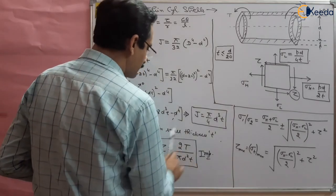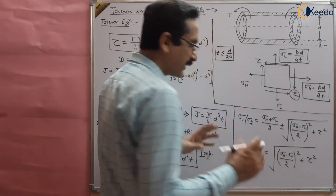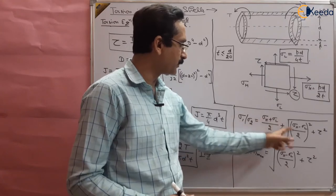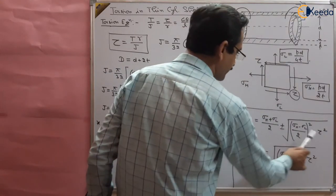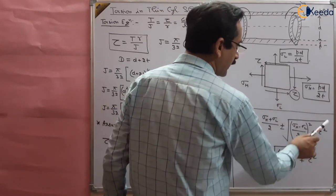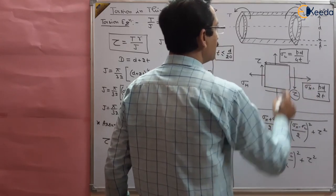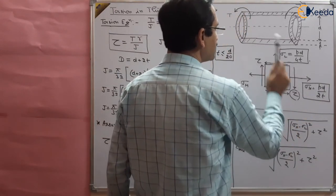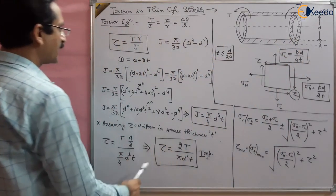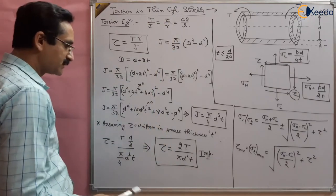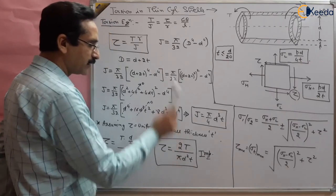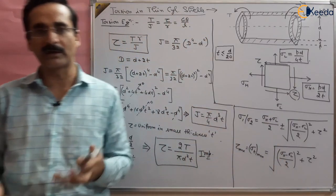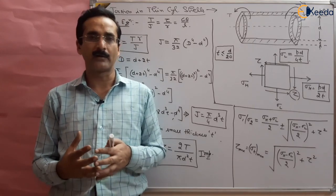This shear stress value tau = 2T/(πd²t) will be used in the principal stress equations. For design purposes, we need the maximum principal stresses or maximum shear stresses. We now have all three terms: sigma_h = pd/2t (hoop stress), sigma_l = pd/4t (longitudinal stress), and tau = 2T/(πd²t) (shear stress due to torque). Substituting these into the principal stress equations gives the maximum principal stress for designing thin pressure vessels under torsion.